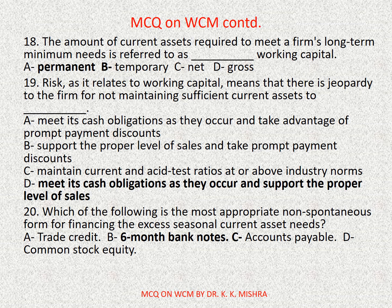Question number twenty: which of the following is the most appropriate non-spontaneous form of financing the excess seasonal current asset needs? Options are: A) Credit, B) Six-month notes, C) Accounts payable, D) Common stock equity. Correct option is B: six-month bank notes.